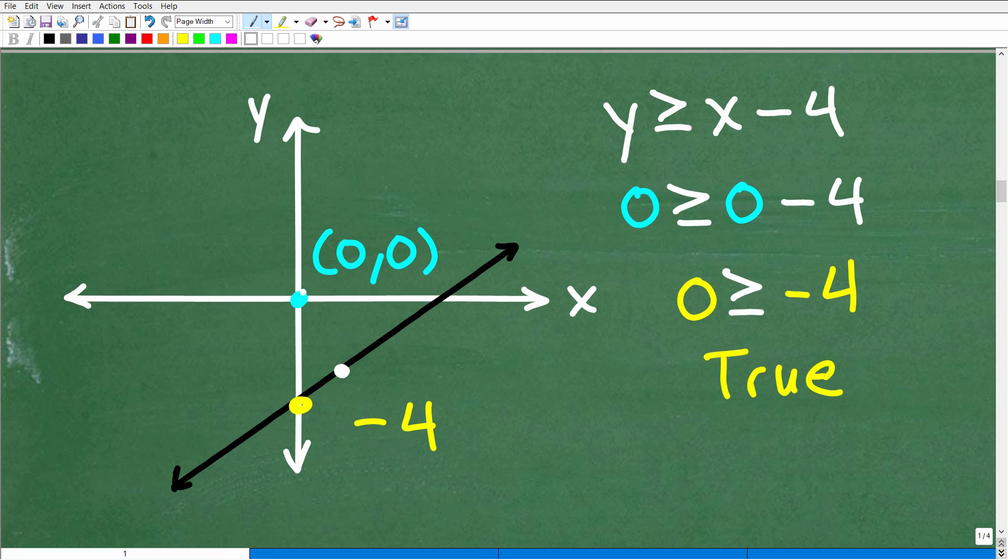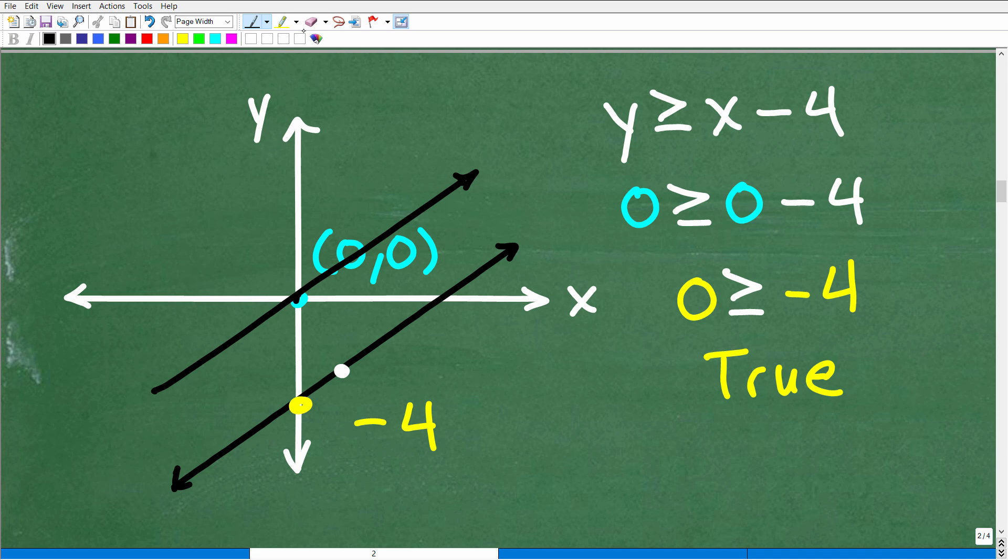So when you're dealing with linear inequalities, two variable linear inequalities, after we graph a solid or dashed line, what we need to keep in mind is one side of this line or the other is true. The other side is false. In other words, this is either the true side and this is the false side, or maybe this is the false side and this is the true side. And what we want to do is shade the true side. Now, what do I mean by true? Well, basically, any point in any one of these regions. All right, so, of course, we saw the answer. This is the true side. But any point, any x, y order pair will satisfy this inequality.